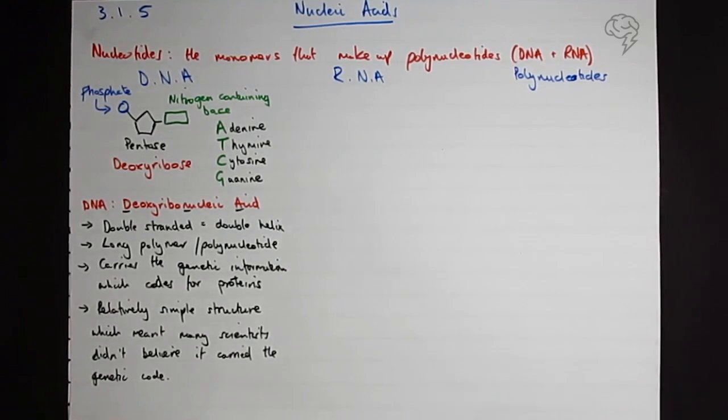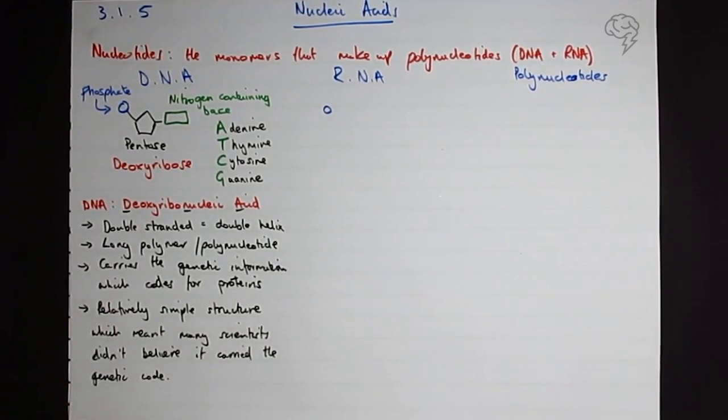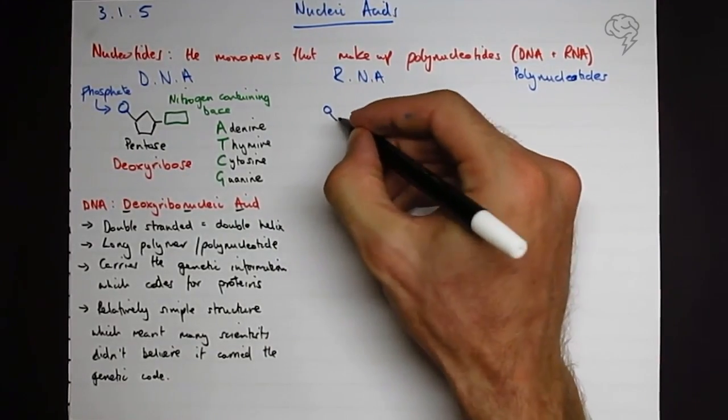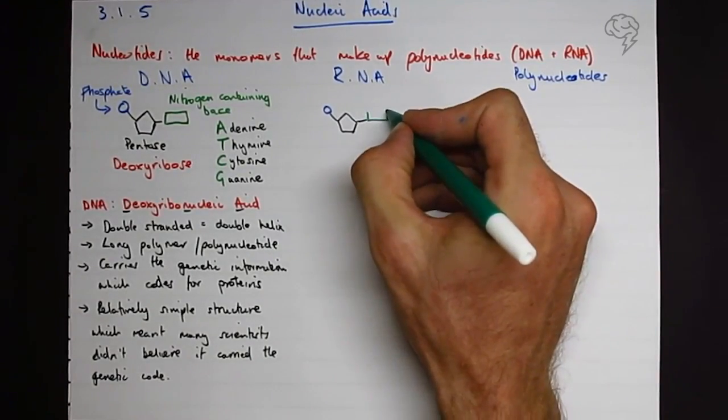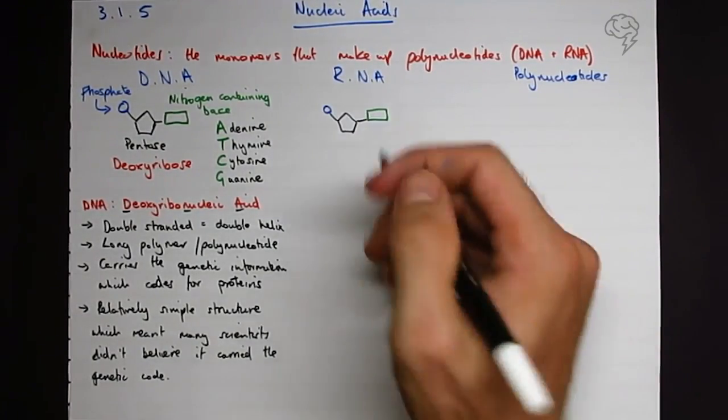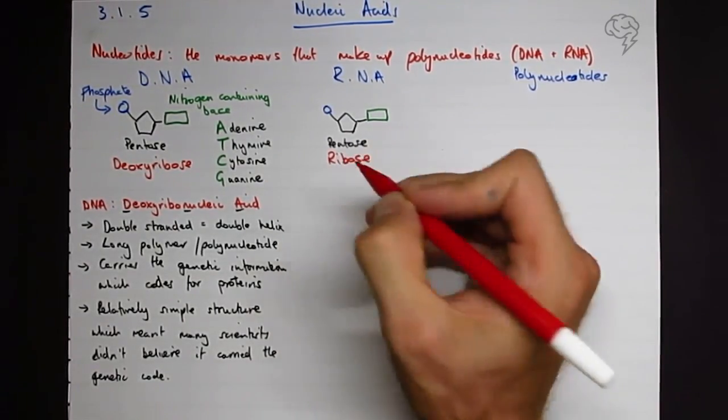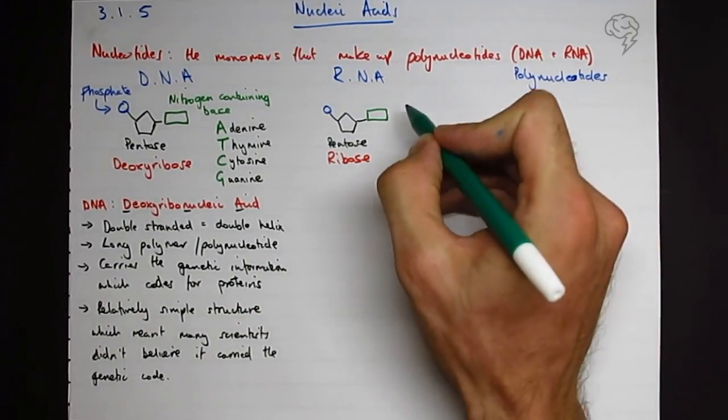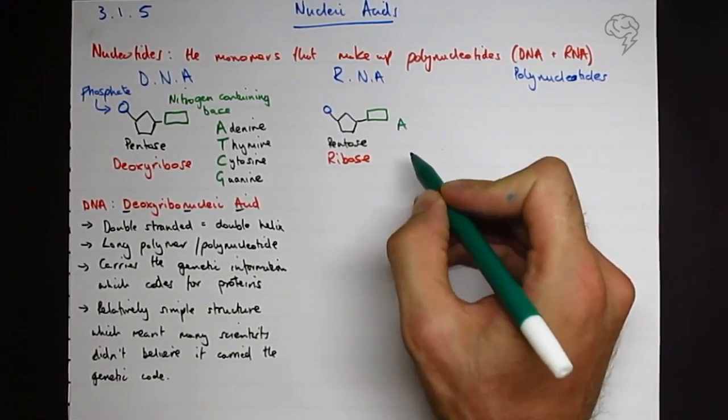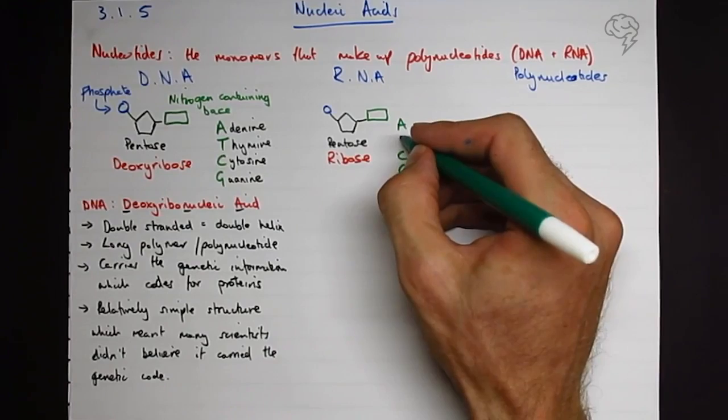RNA's nucleotide is going to look almost identical. The only difference is the sugar. It's also a pentose sugar and there's also a nitrogen-containing base, but the difference is the pentose sugar is ribose.